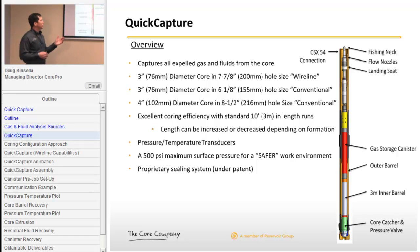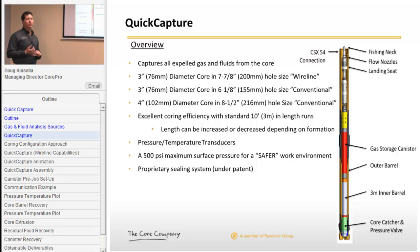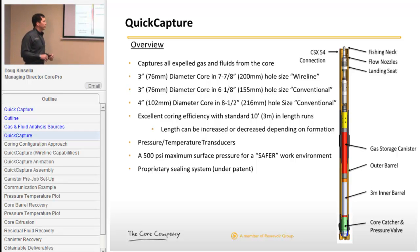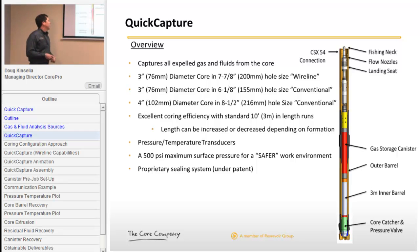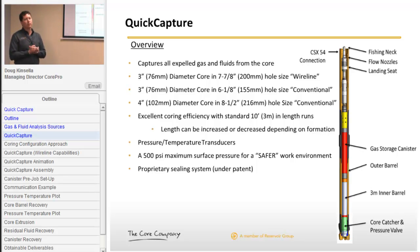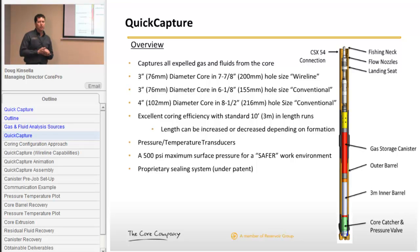There are pressure and temperature transducers throughout the barrel and canisters, allowing us to record what's happening as we're coming out of the hole — we can watch the barrel vent off gases expelled from the core and store them in the canisters. We limit the tool to a 500 psi working pressure on surface to create a safer work environment. We also have a new proprietary sealing system on the bottom, which gives us mid-90% efficiency and repeatability in the tool.